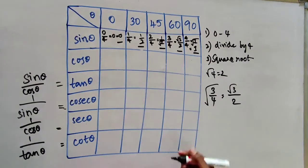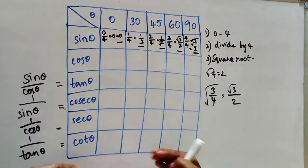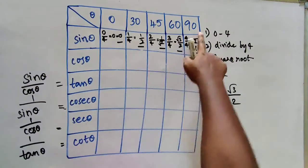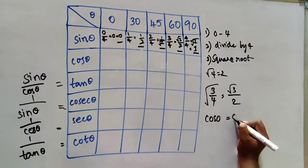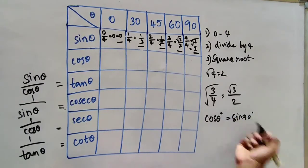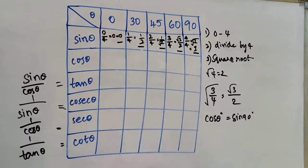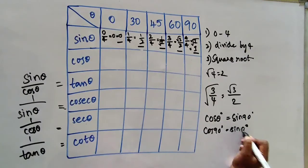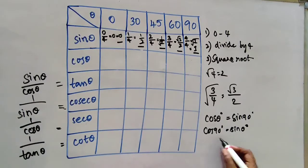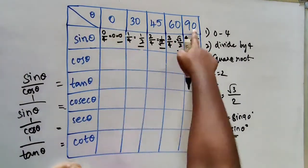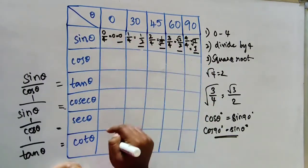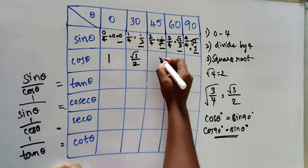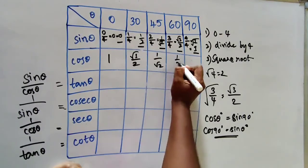The next table is easy. Once we write the sin table, the cos table comes automatically. Cos 0 equals sin 90, and cos 90 equals sin 0 — these are trigonometric identities. So for cos theta, just write the sin table values in reverse: 1, √3/2, 1/√2, 1/2, 0.